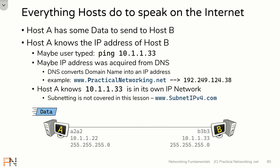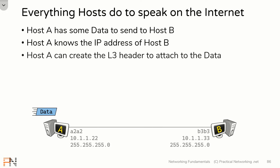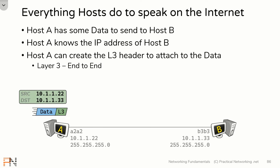Since host A knows the IP address of who it's trying to speak to, it's able to create the layer 3 header to attach to this data. This layer 3 header is going to serve the function of end-to-end delivery. Therefore, it's going to include a source IP address of whoever is sending the data — in this case, host A — and a destination IP address of whoever is meant to receive the data. Now, layer 3 cannot interact with a wire. For that, we need layer 2, so host A next needs to add a layer 2 header to this packet.